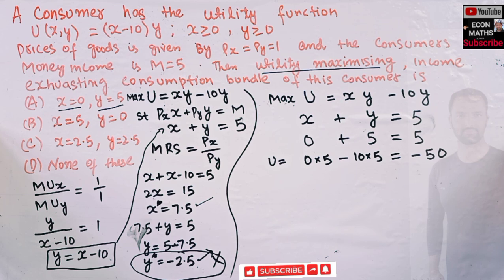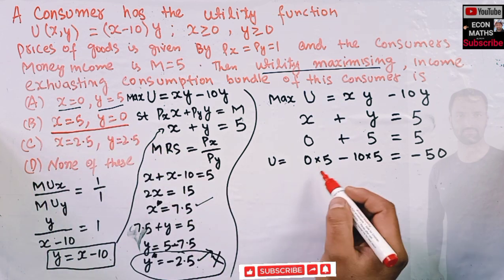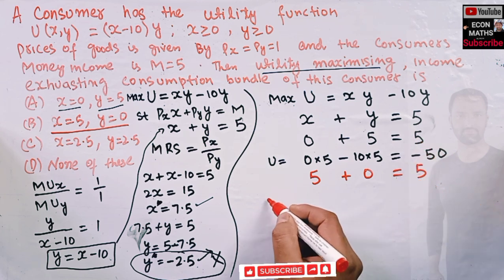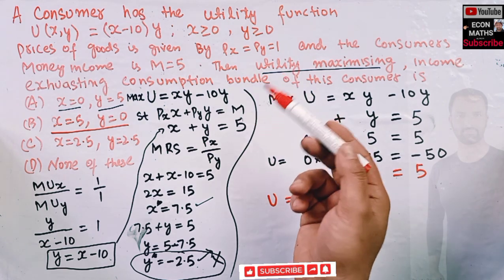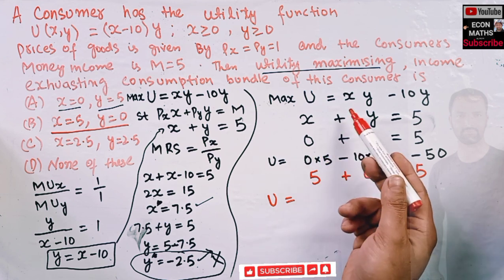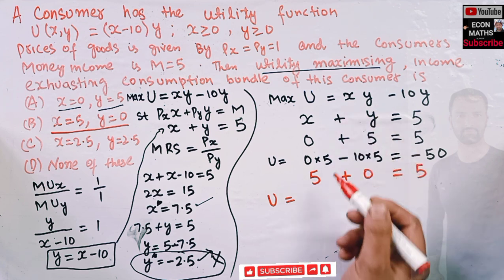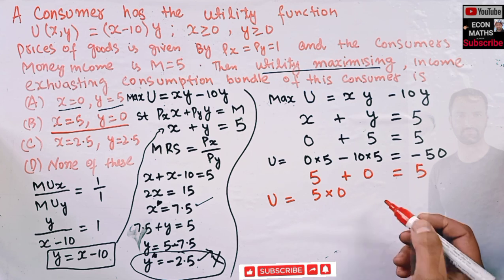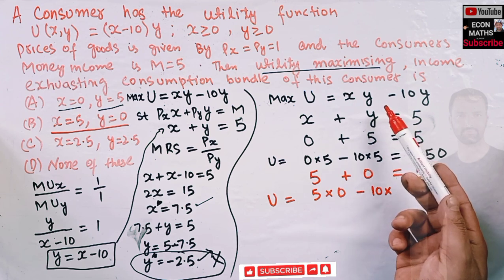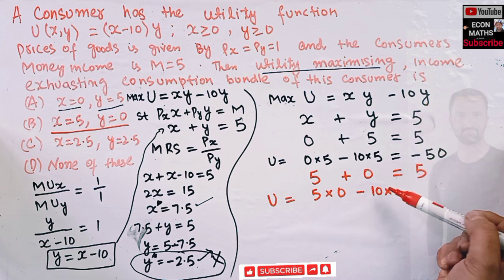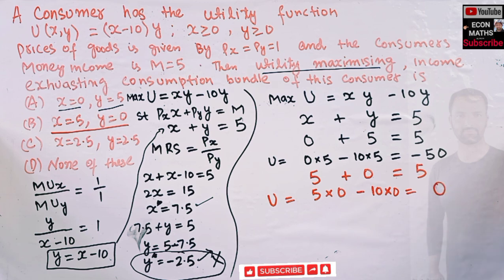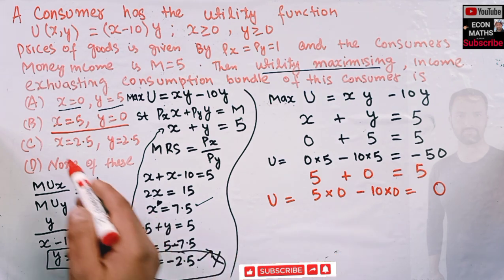Second option: x = 5, y = 0. The budget constraint is satisfied: 5 plus 0 = 5. The utility is U = (5)(0) minus 10 times 0 = 0 minus 0 = zero. The consumer gets zero utility at this bundle.